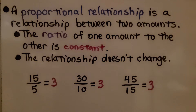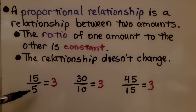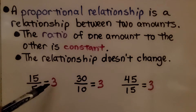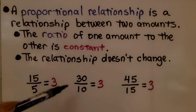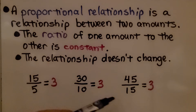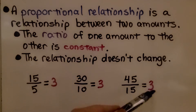A proportional relationship is a relationship between two amounts where the ratio of one amount to the other is constant — the relationship doesn't change. For example, 15 to 5 is 3, 30 to 10 is 3, and 45 to 15 is also 3.